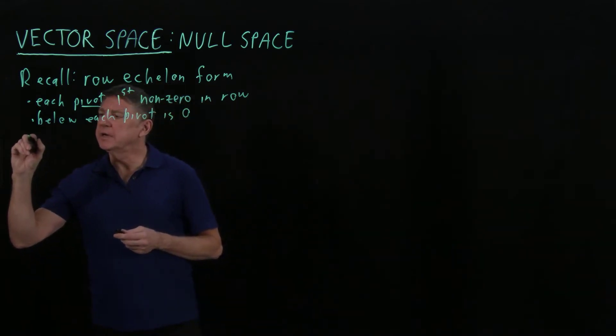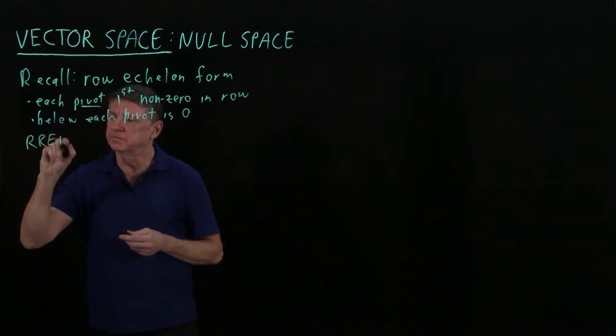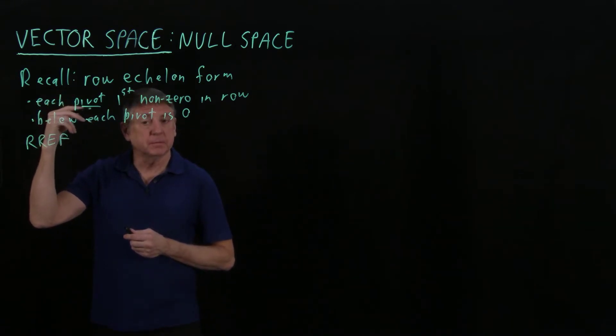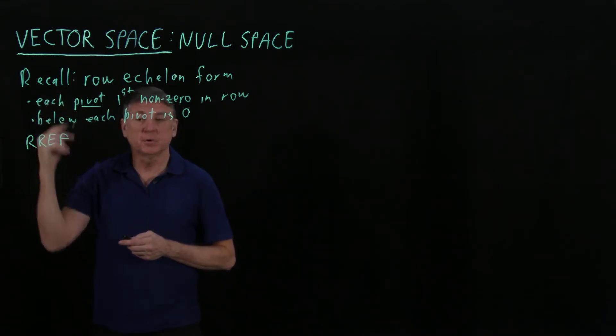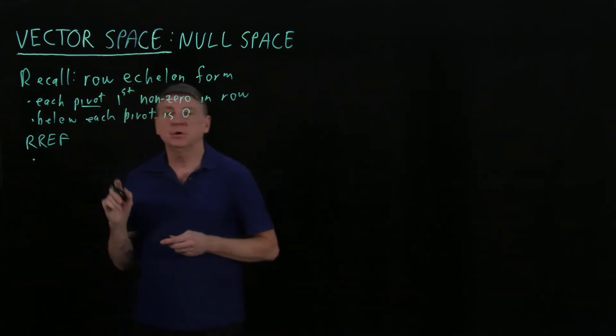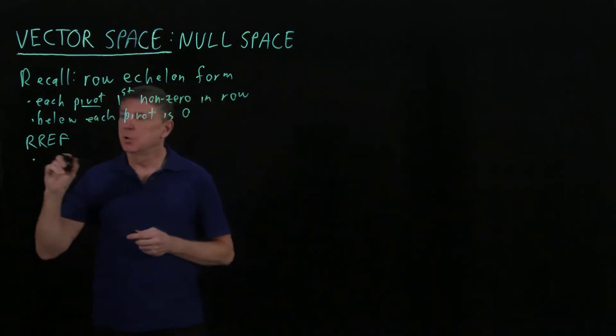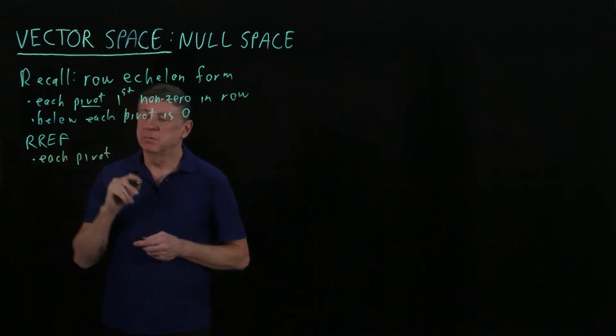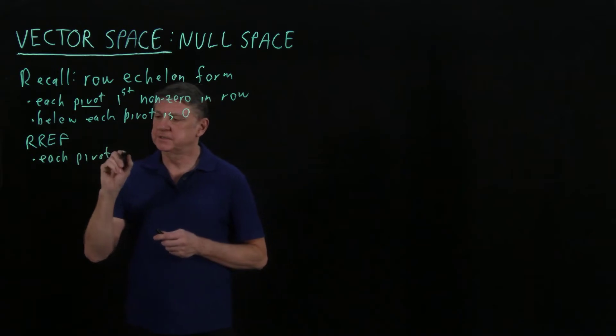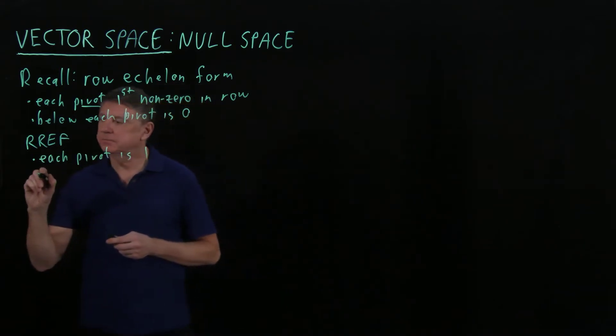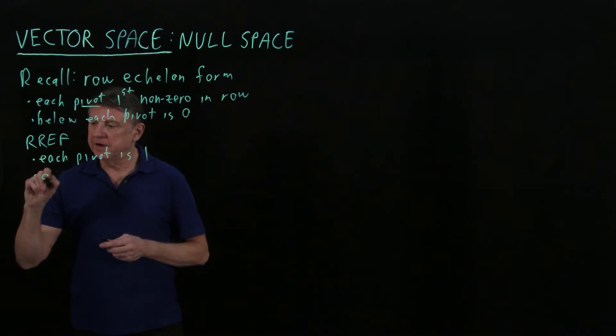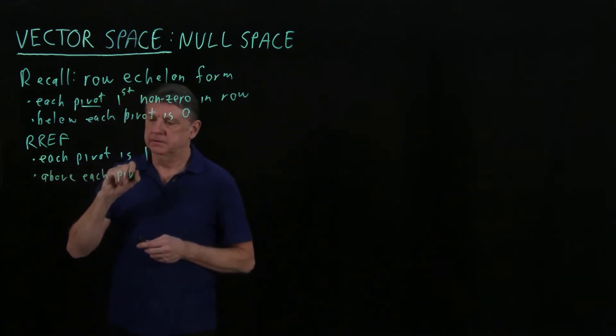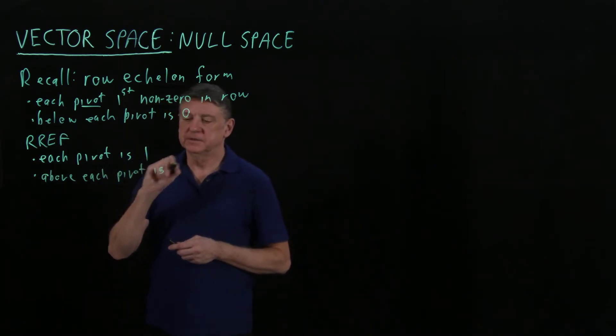The next one is the reduced row echelon form, which is derived from the Gaussian elimination or from the row echelon form. In it there are two specializations: one is that each pivot has been modified by row operations to be one, and above each pivot is zero.